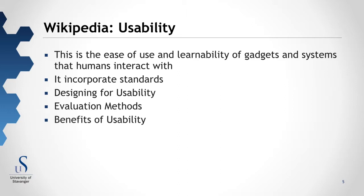The third article, from Wikipedia, is about usability in general. It covers the ease of use and learnability of gadgets and systems that humans interact with. It incorporates standards and addresses designing for usability, evaluation methods, and the benefits of usability.